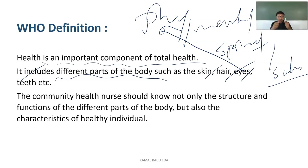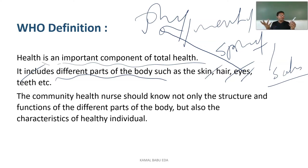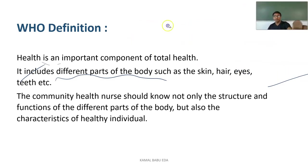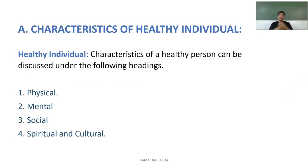As a community health nurse, you should know the structure and functions of the different parts of the body and the characteristics of a healthy individual. Only then can you assist people in the community properly. Without knowing the characteristics of a healthy individual and the normal functioning of body parts, you cannot assist them effectively or gather accurate data from the community.